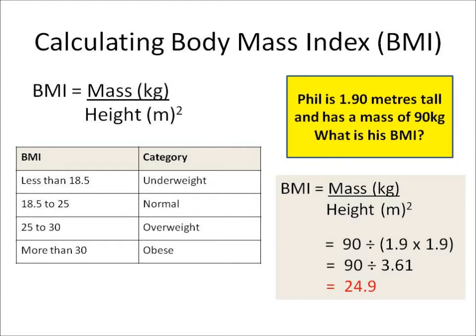You need to be able to calculate body mass index, BMI. The BMI of somebody tells us, or can help us work out, whether they're underweight, normal weight, overweight, or obese. Body mass index equals the mass of somebody divided by their height squared.